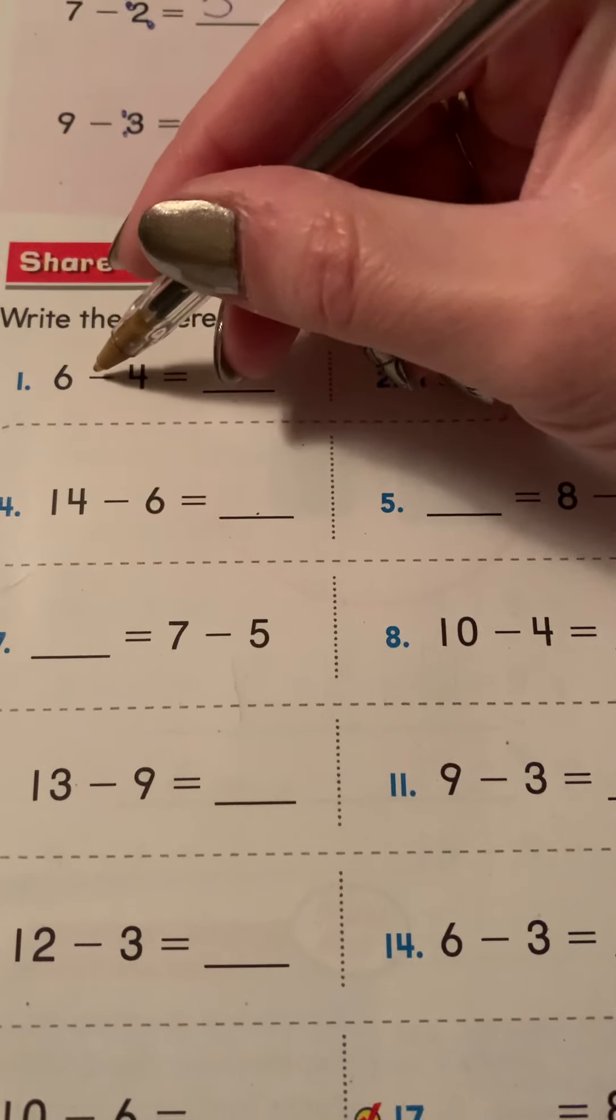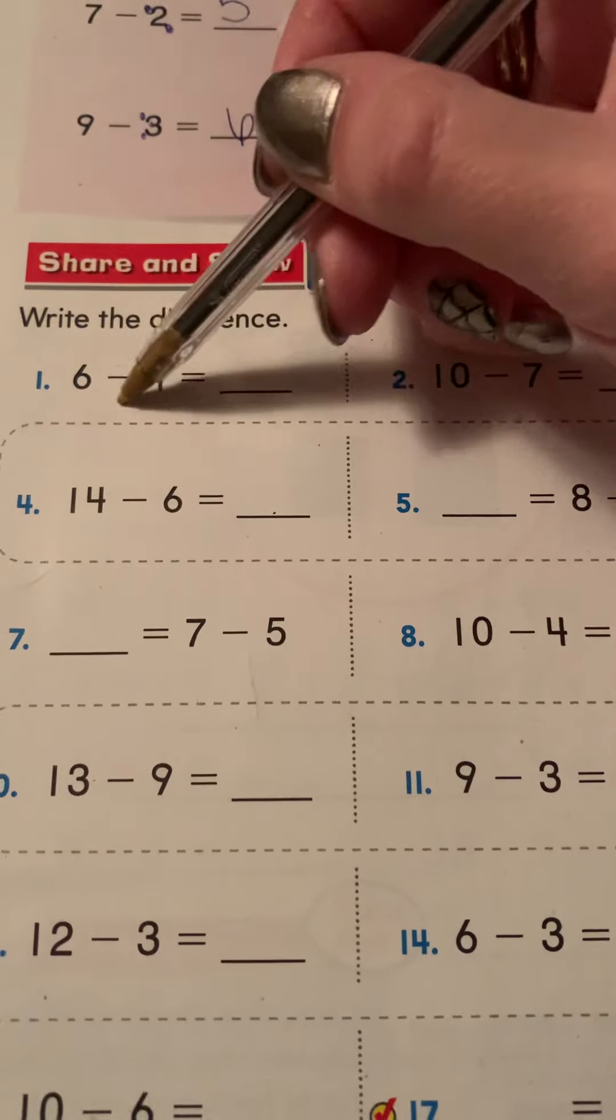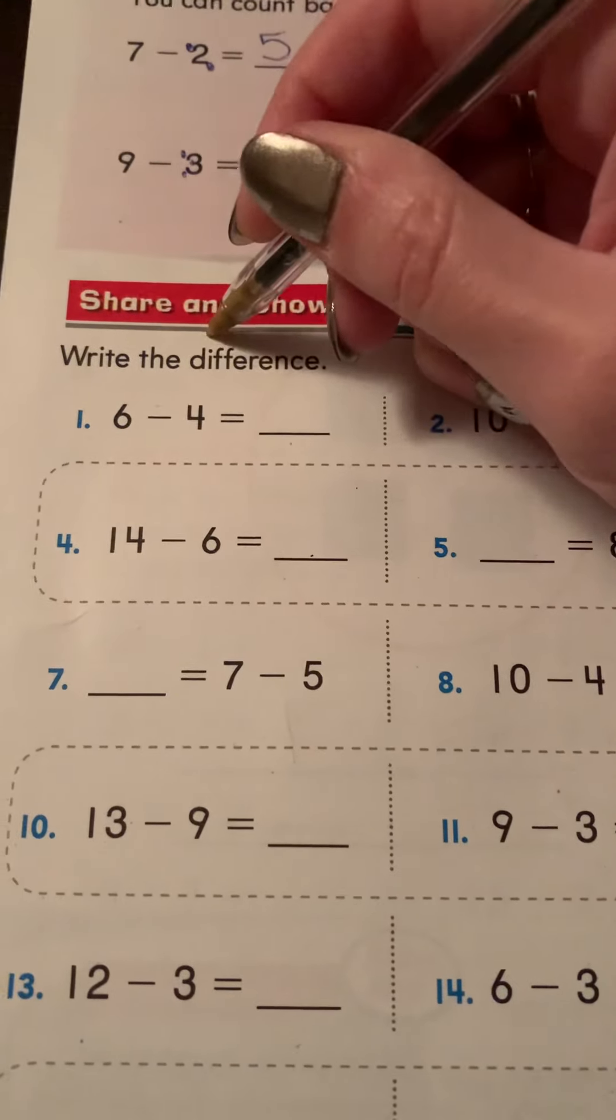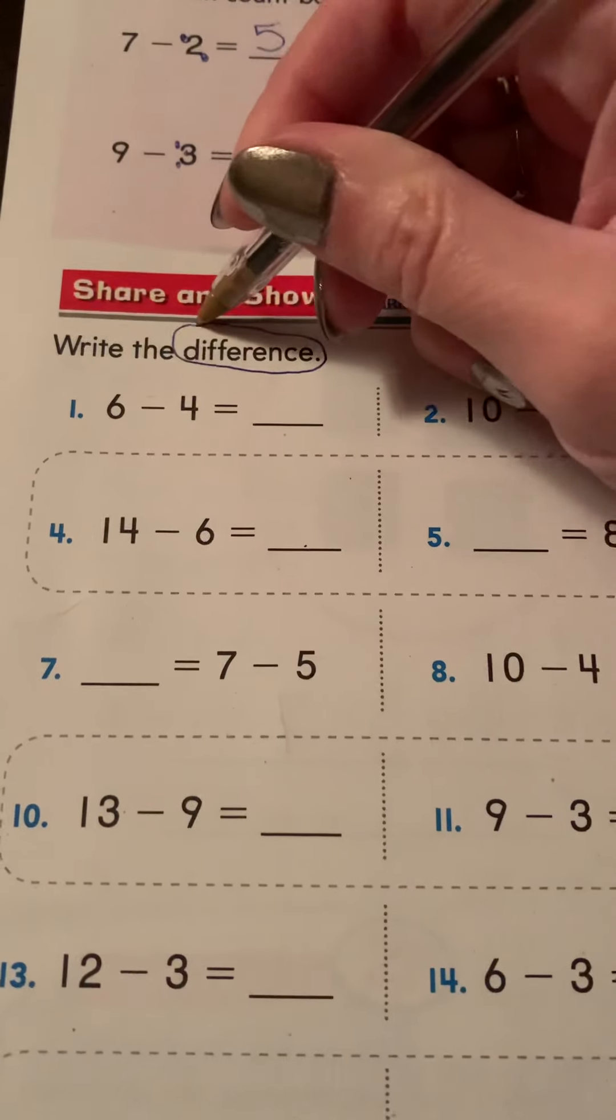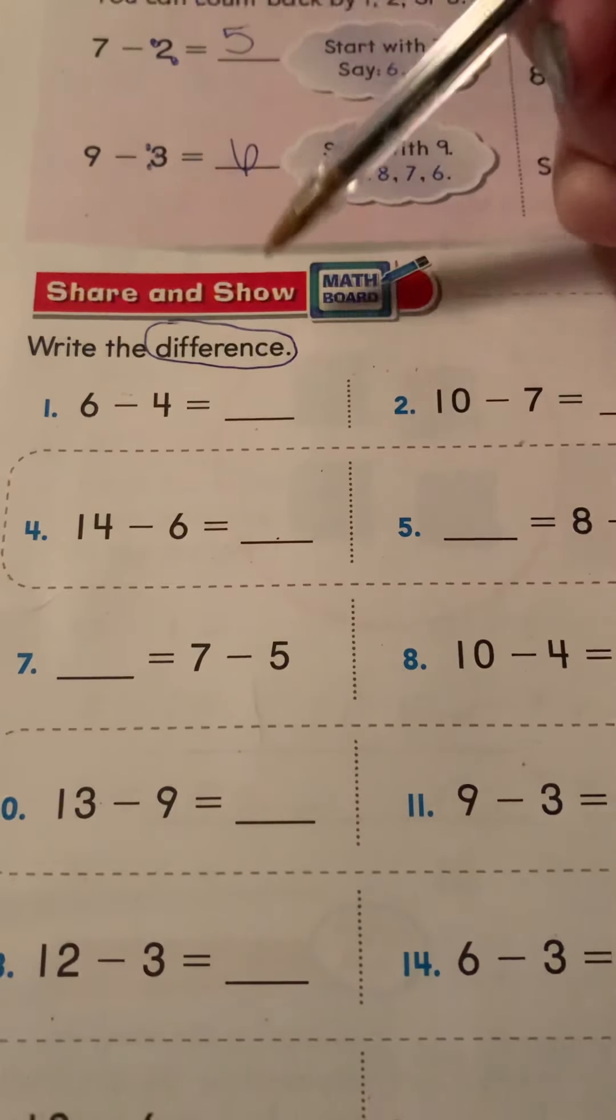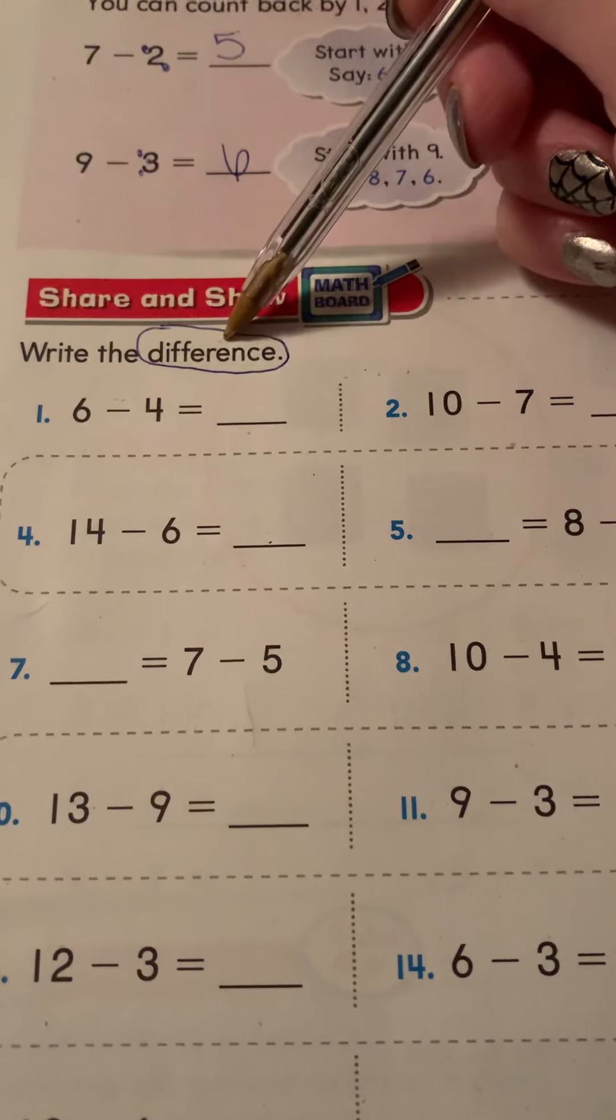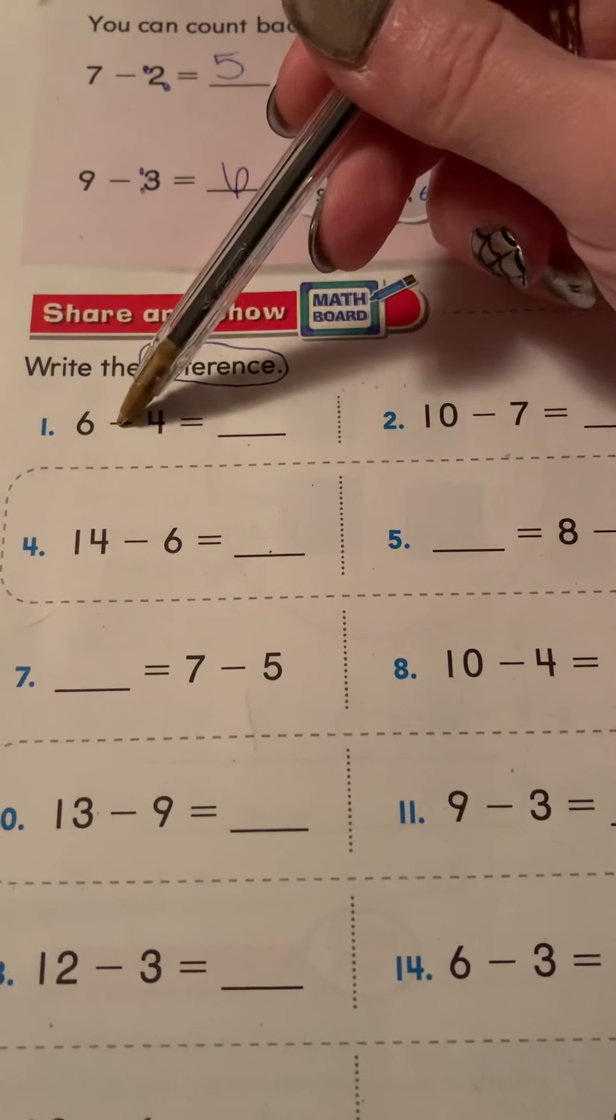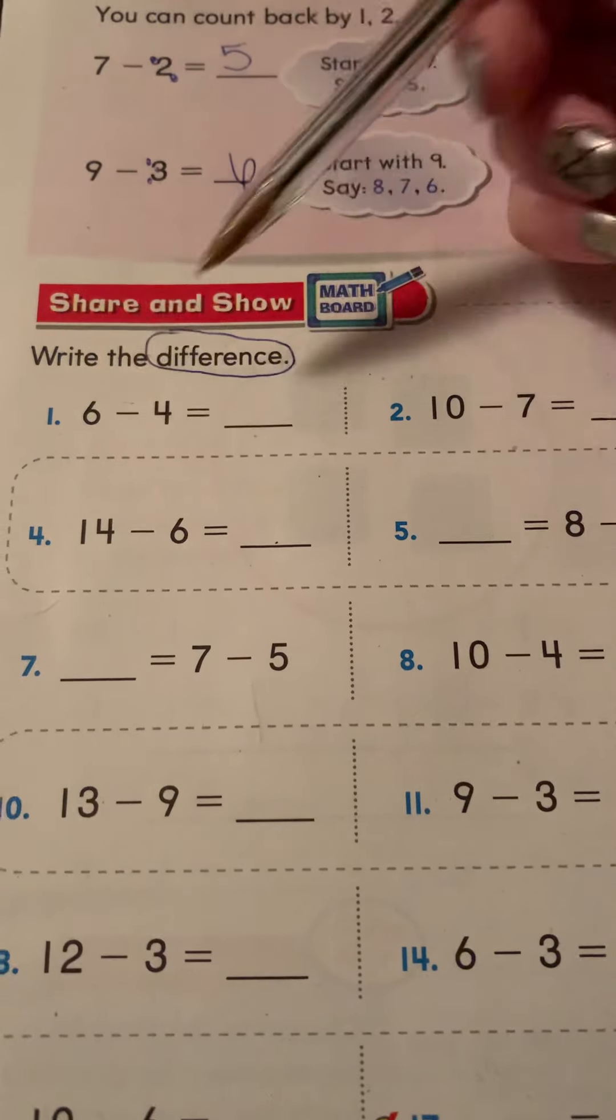So when you see this subtracting, this minus sign for subtracting, you see the word difference, I want you to make a connection in your head that that word difference means subtract. Can you say that three times? Difference means subtract. Difference means subtract. One more time.